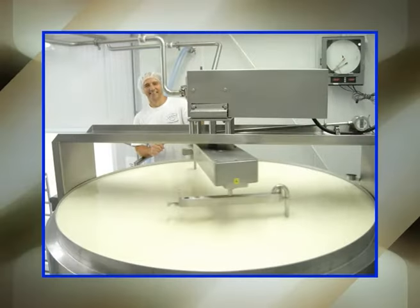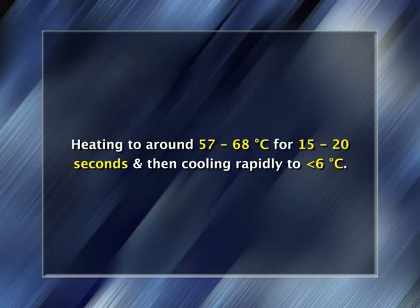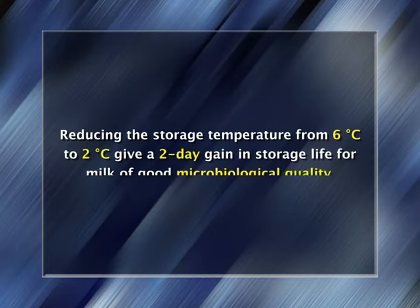Thermization: the most commonly used technique is to apply a mild heat treatment by heating to around 57 to 68°C for 15 to 20 seconds and then cooling rapidly to less than 6°C. This reduces the psychrotrophic population significantly and can extend the storage life of raw milk by several days. Deep cooling: storing milk at as low a temperature as possible, such as reducing from 6°C to 2°C, has been shown to give a 2-day gain in storage life for milk of good microbiological quality.